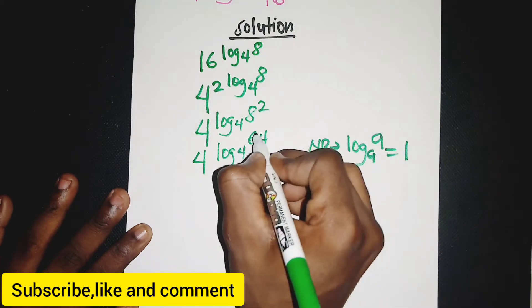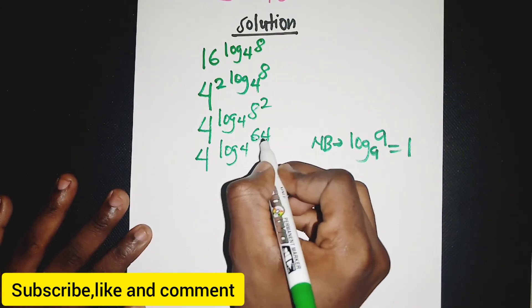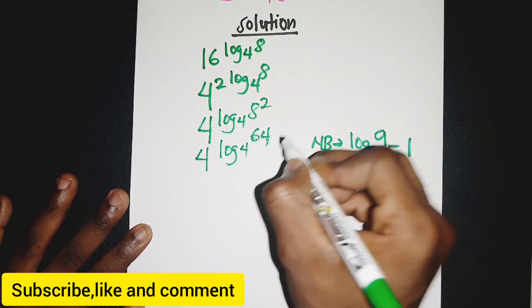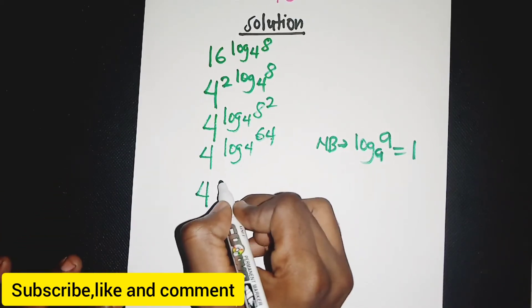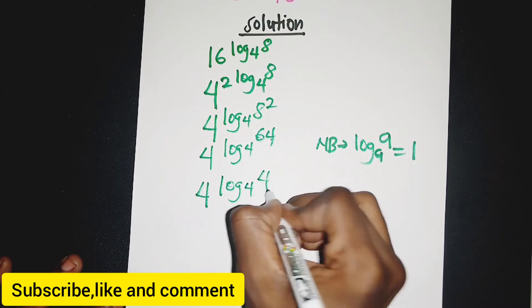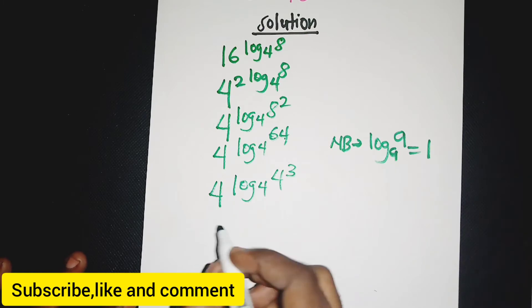64 is just 4 to the power 3, because 4 times 4 is 16, and 16 times 4 is 64. So it's basically 4, then we have log base 4, then 4 to the power 3.